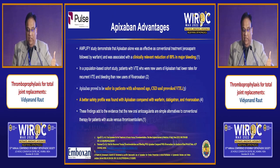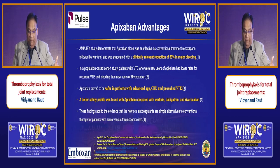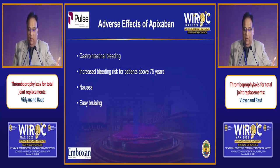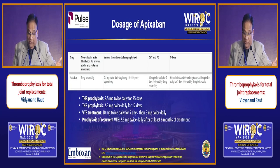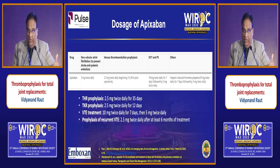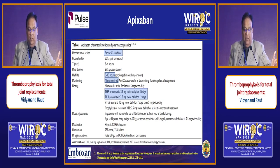Apixaban acts as a Factor Xa inhibitor. Factor Xa comes in at the confluence of the intrinsic and extrinsic coagulation pathways — rivaroxaban also acts at this point. The greater the level of Factor Xa inhibition, the greater the efficacy, because Factor Xa is generated much earlier in the cascade than thrombin. Bioavailability is about 50% and elimination half-life is 12 hours. Clinically relevant reduction of major bleeding in almost 70% of cases, safe in renal compromise and advanced age.